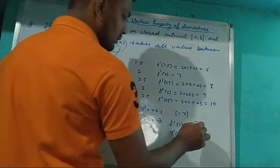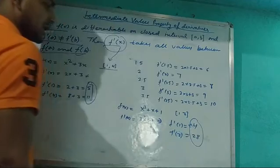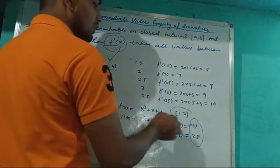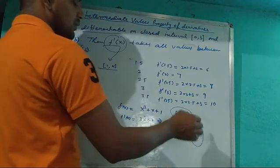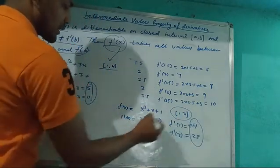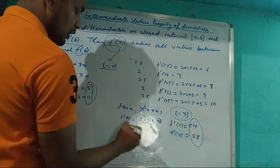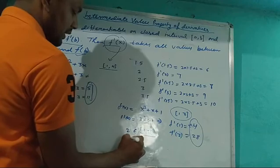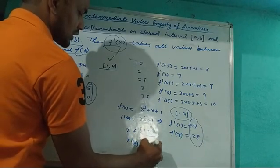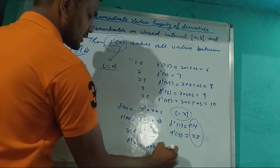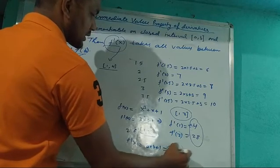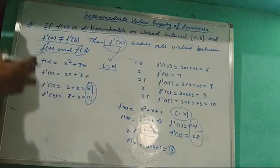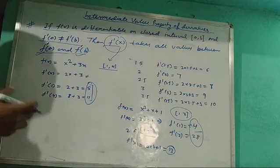Now the interval is 4 to 28, and all values of f'(x) where x belongs to [1, 3] lie between 4 and 28. Let us take a point: suppose x = 2, which belongs to [1, 3]. Then f'(2) = 3(4) + 1 = 13, and 13 lies between 4 and 28. So this statement is applicable for all differentiable functions on a closed interval.